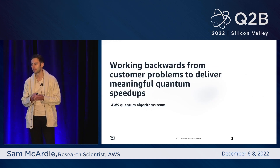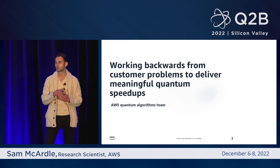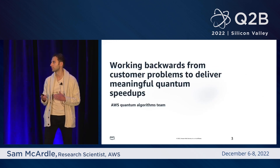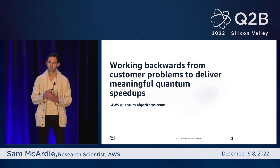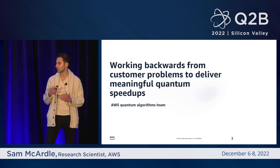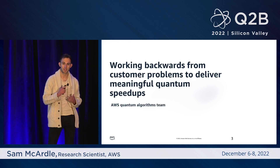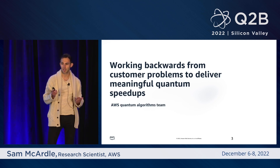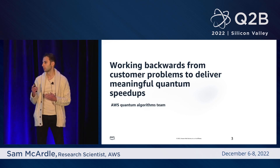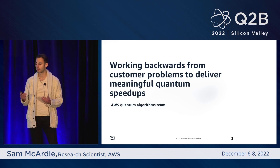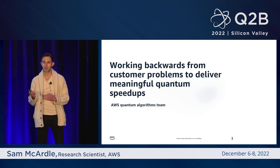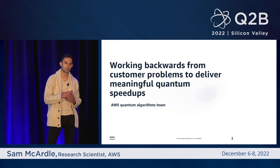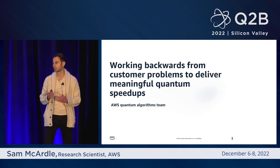The mission of our team is to work backwards from customer problems to deliver meaningful quantum speedups. What this means is that we go out and talk to our customers in industry and academia, and then we understand what their problems and pain points are, and then we work on developing and optimizing quantum algorithms such that they give practical advantages for these problems.